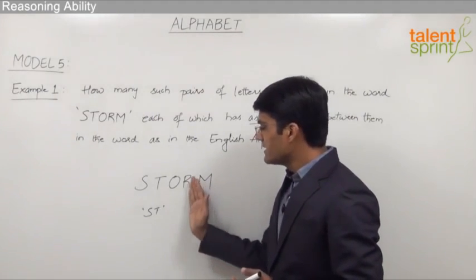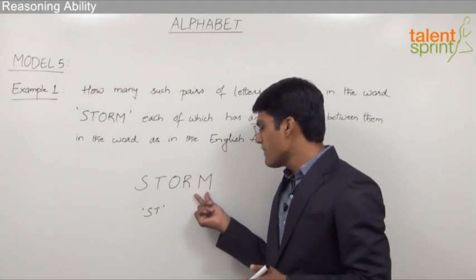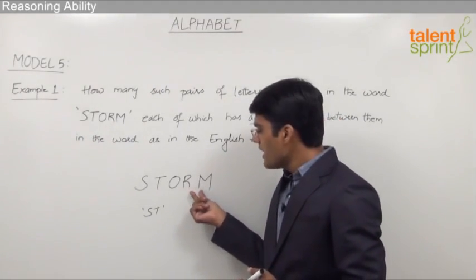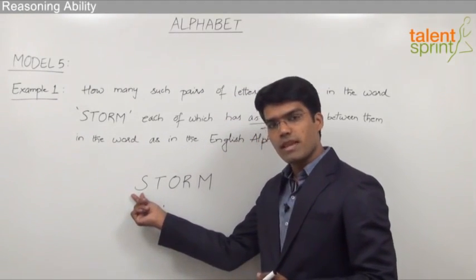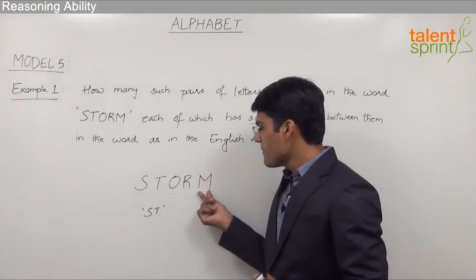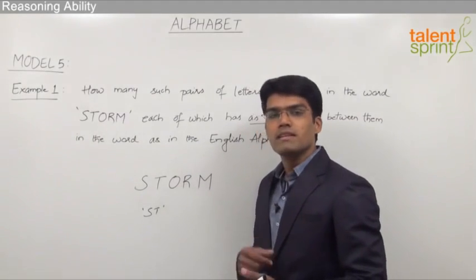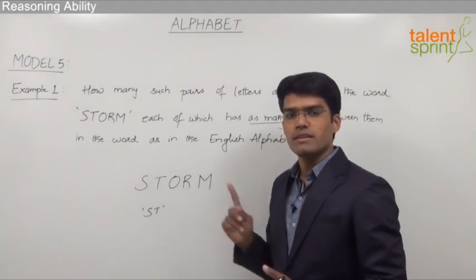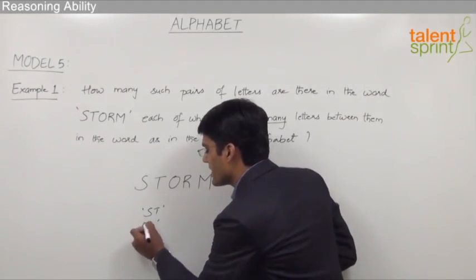Since M is the last letter, there are no letters beyond it in the given word, but there are letters before M. So we now need to check in the reverse direction. Starting from M in the English alphabet: M, N, O — we can see that M and O form a correct pair, because in the word there is one letter (R) between M and O, and in the alphabet M, N, O also has one letter (N) between them. So M and O can be taken as a correct pair.